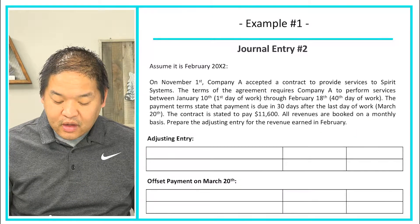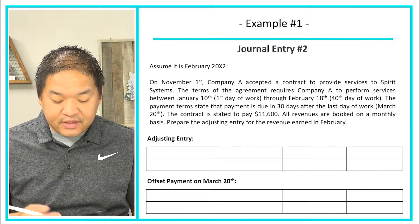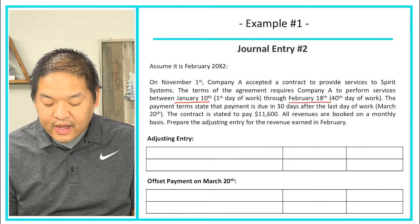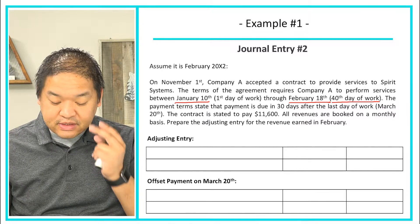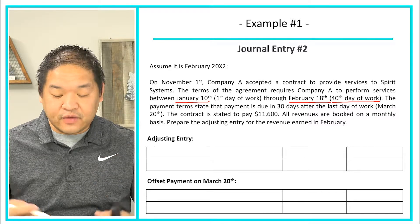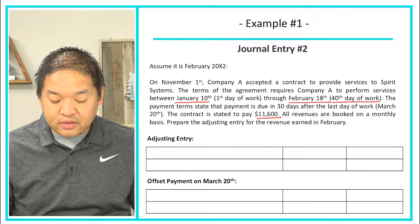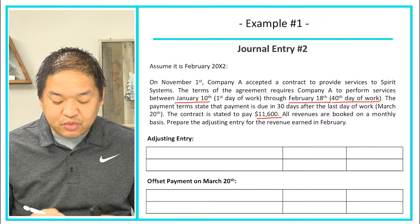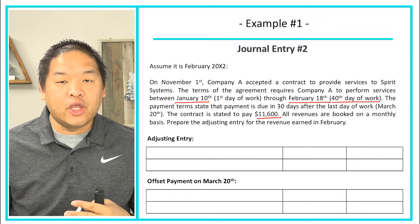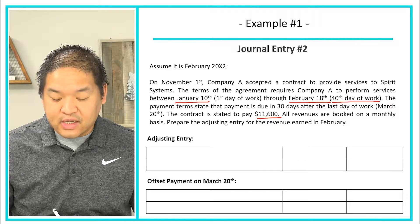Moving on to the second example: on November 1st, Company A accepted a contract to provide services to Spirit Systems. The agreement requires Company A to perform services between January 10th through February 18th — 40 days of work — for $11,600. Payment is due within 30 days after the last day of work, which would be March 20th. All revenues are booked on a monthly basis.